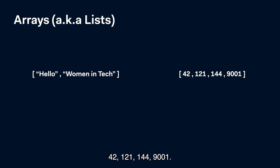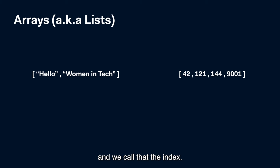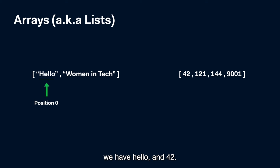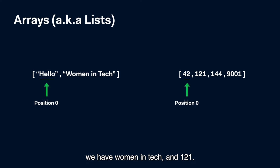42, 121, 144, 9001. With arrays, each position has a number, and we call that the index. Usually, but not always, the first position is actually position 0. So at position 0 of each of these arrays, we have 'hello' and 42. At position 1 of each array, we have 'women in tech' and 121.